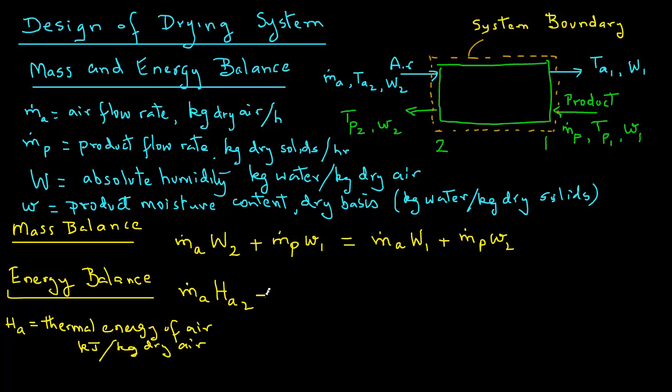And similarly, we have heat of the product, so we have m_p times H_p1, where H_p is the thermal energy of the product, and the units are kilojoules per kilogram of dry solids. Note that everything in this balance is based on either kilogram of dry air or kilogram of dry solids.